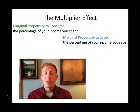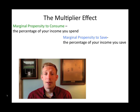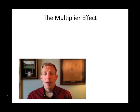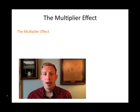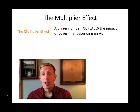Now, when government decides to spend money, they have to take this into consideration: what's the marginal propensity to consume of households? Because this can have an impact on the effectiveness of government policy. The government looks at a number they call the multiplier effect. The multiplier effect depends upon the marginal propensity to consume, because if people spend a large portion of their income, that's going to increase the effectiveness or increase the power of government spending.